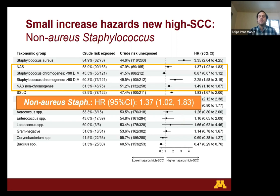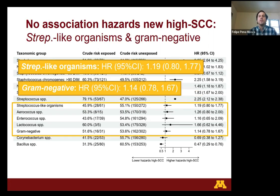For non-aureus Staphylococcus, the hazard of high somatic cell count was higher in cows that had non-aureus Staph in the first month of lactation compared to those that did not. However, this association differed by species and by time. For Staph chromogenes, a negative association was found in the first three months of lactation, and afterwards the risk of high somatic cell count increased. For other Staph species that were not Staph chromogenes, the risk of high somatic cell count was 1.45 times greater in cows with an infection compared to those without. We found no association between the presence of Strep-like organisms or gram-negative bacteria and high somatic cell count throughout lactation — with hazard ratios of 1.19 and 1.14 respectively.